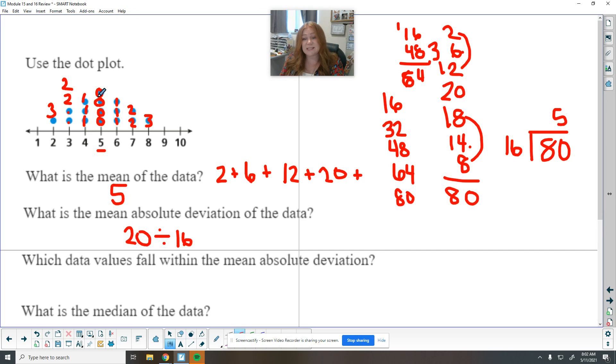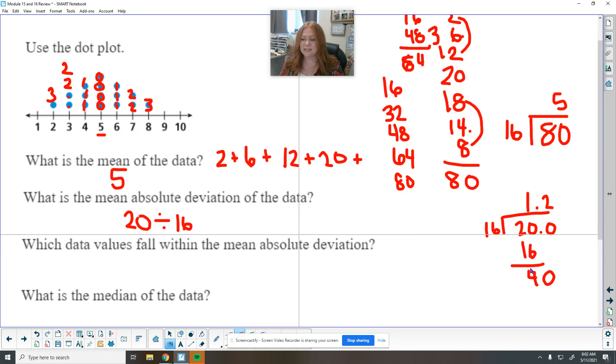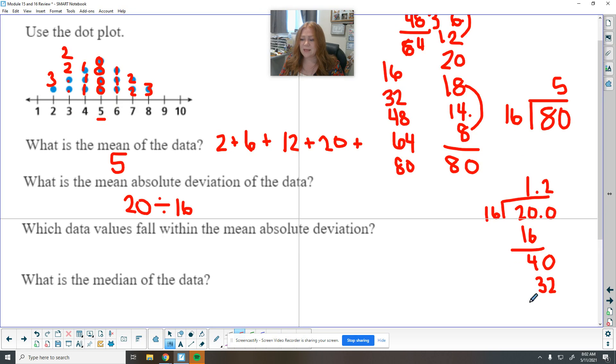So we're still, even though these are zero away, they're still part of the data set. So 20 divided by 16. So this goes in here one time. And we've got four left over, 16 goes into 40, two times, 16 times two is 32. Then we've got eight left over, bring down a zero. And we know that 16 goes into 8, 5 times. So our mean absolute deviation is 1.25.